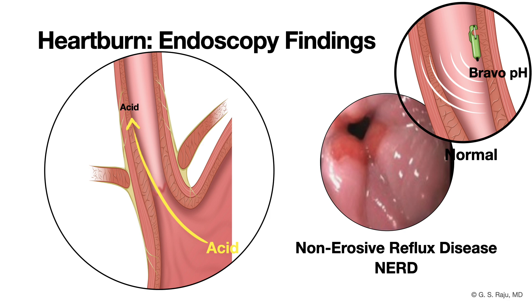To figure out if acid is really causing it when you can't see the damage, the approach discussed was using a pH probe. The Bravo pH capsule is a common one — a little device clipped onto the esophageal wall during the endoscopy. The patient goes home with it attached inside; it wirelessly records acid levels for about four days, giving you objective proof of whether there is significant acid reflux happening even without visible erosions. The scope finding, or lack of finding, directs the next step.